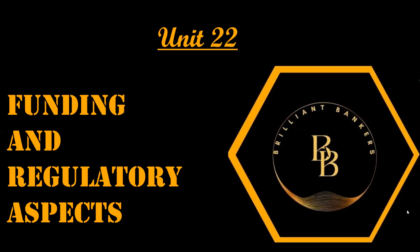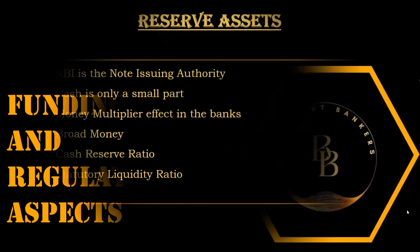What does RBI do to regulate money? For funding, as you all know, RBI is the note issuing authority in India — the currency in circulation is directly controlled by the RBI. However, currency is only the cash component of the money in circulation, and it is only a small part of the total economy. This currency is deposited in banks and further lent out as loans.